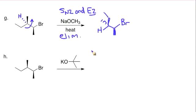Okay, now that they're anti, we can use the OCH3- as a base, and we'll do the E2 elimination process.